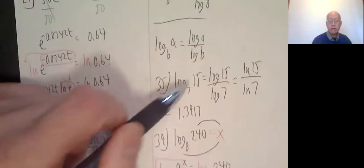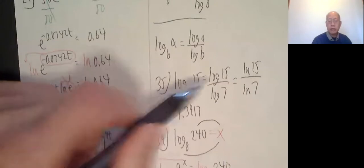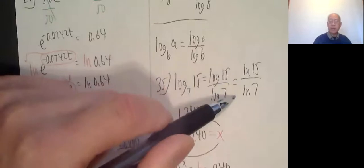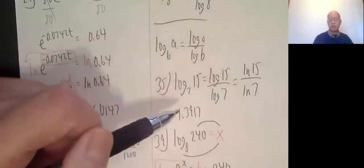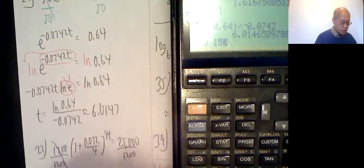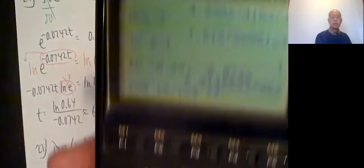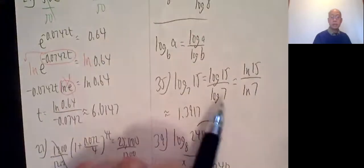So for instance, log base 7 of 15. Shortcut now is just log of 15 divided by log 7, which is equal to ln 15 over ln 7. You get the same thing you might notice. So let me show you log 15 divided by log 7. Log 15 divided by log 7, 1.3916, 1.3916, et cetera. Rounded off to 1.3917.